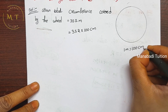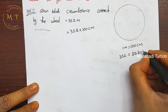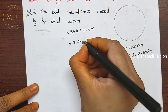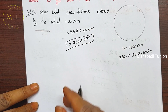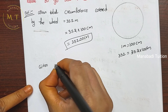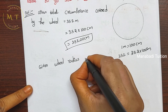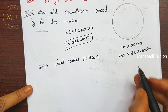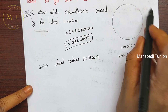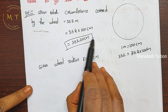Since 1 meter equals 100 centimeters, 352 meters equals 352 into 100, which is 35,200 centimeters. Given wheel radius is 28 cm. The wheel is circular, so it rotates along the outer circumference. First we find the circumference covered in one rotation, then check how many rotations cover the total distance.